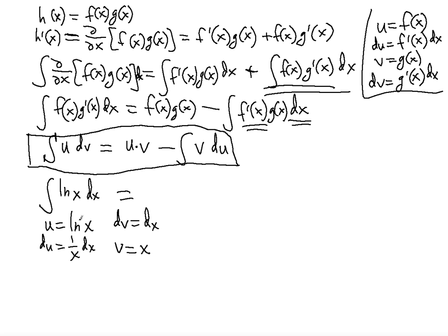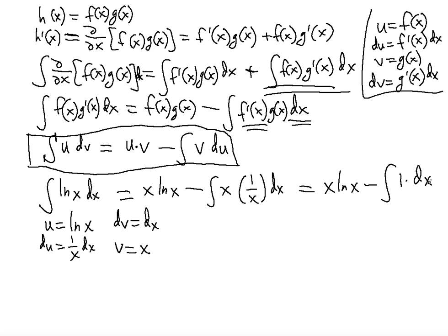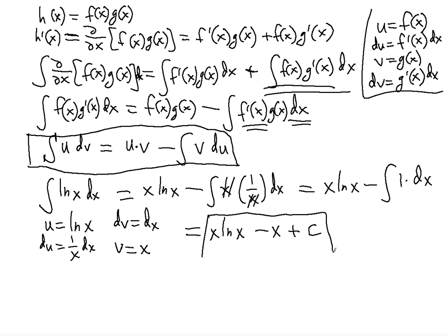Now applying the formula u·v minus the integral of v·du: u is ln(x) and v is x, so we get x·ln(x). Then minus the integral of v·du, which is x·(1/x)dx. The x's cancel, giving x·ln(x) minus the integral of dx, which equals x·ln(x) minus x plus a constant. That's the antiderivative of ln(x).